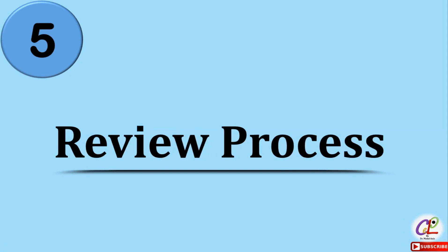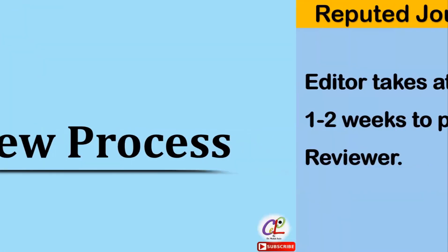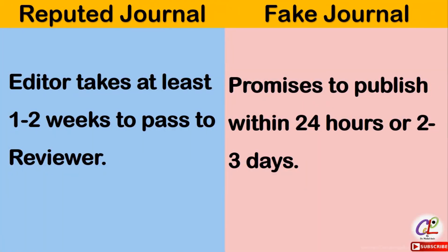The next important factor is the review process. It is very important that whatever data you are going to publish in the journal should be reviewed by quality experts. The reputed journal follows the policy that the editor will take at least one to two weeks to pass the paper to the reviewer for the further review process. While in case of a fake journal, they will promise to publish your research article within 24 hours or two to three days, which is impossible for any reviewer to respond to in such a short span of time.